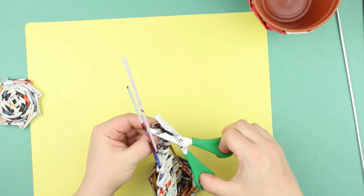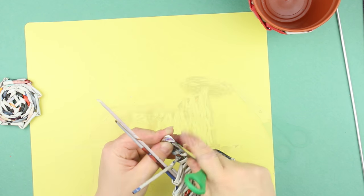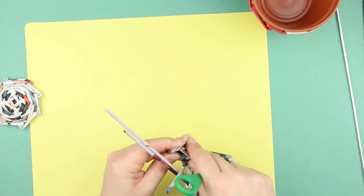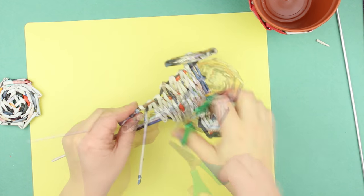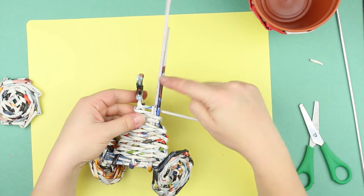Cut off the excess end. Glue it. Cut off the excess. Repeat for the other side.